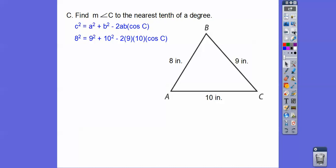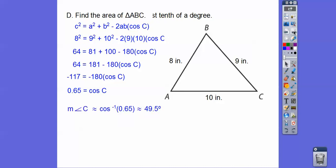So here we go. And then when we crank that out, we're going to get about, let's see, subtract 181, and then divide by negative 180, and we get 0.65. So angle C is going to be the inverse cosine, so we get about 49 degrees right there.